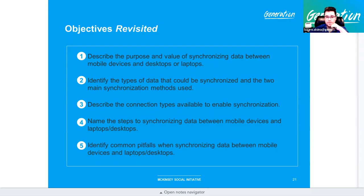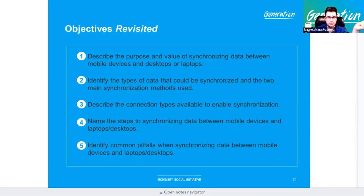Common pitfalls when synchronizing data: What happens if you can't back up to a first, second, or third party cloud? Use external storage. What if you lose your external? Then you have no backup unless you also have cloud. Don't put your eggs in one basket — that is the key pitfall warning for updating and synchronizing data.